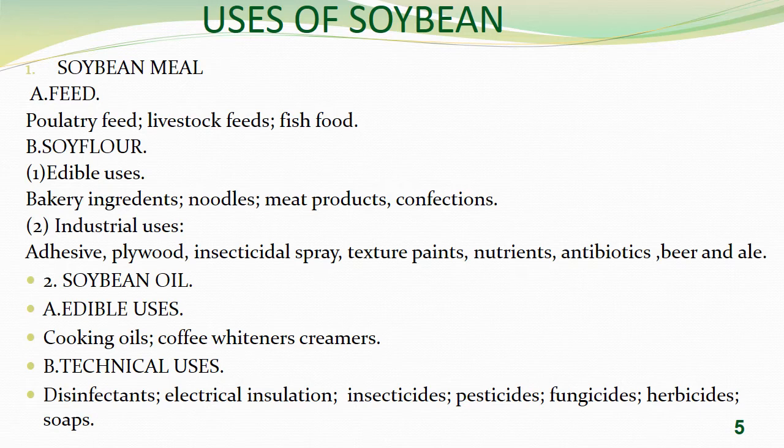Utility of soybean: soybean meal is used as feed for poultry, livestock, and fish. Soya flour is used as an edible ingredient in bakery products, noodles, meat products, and confectioneries. In industrial use, it is used as adhesive, plywood, insecticidal spray, texture paints, nutrients, antibiotics, and beer.